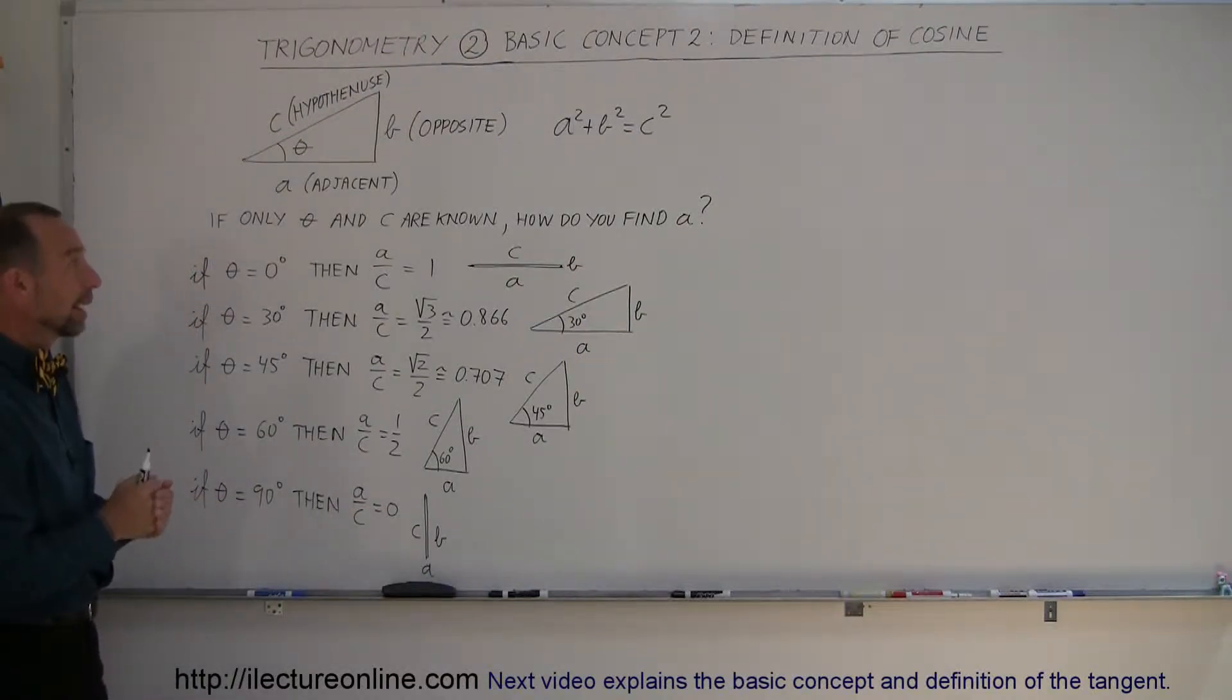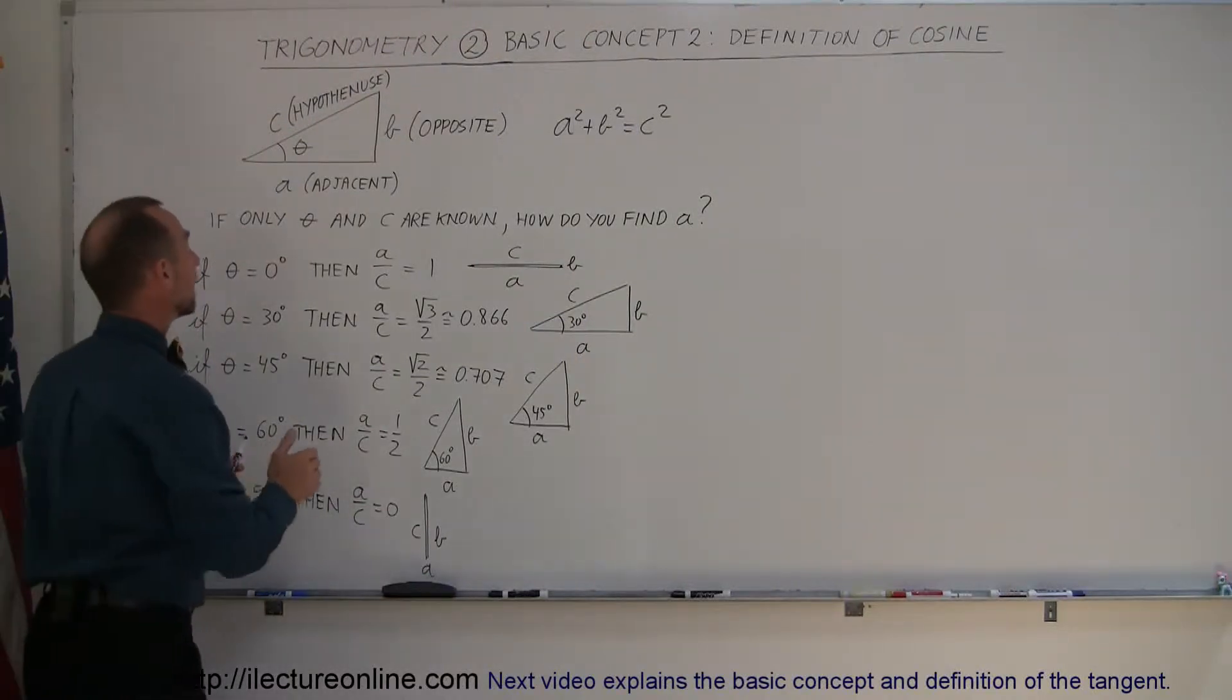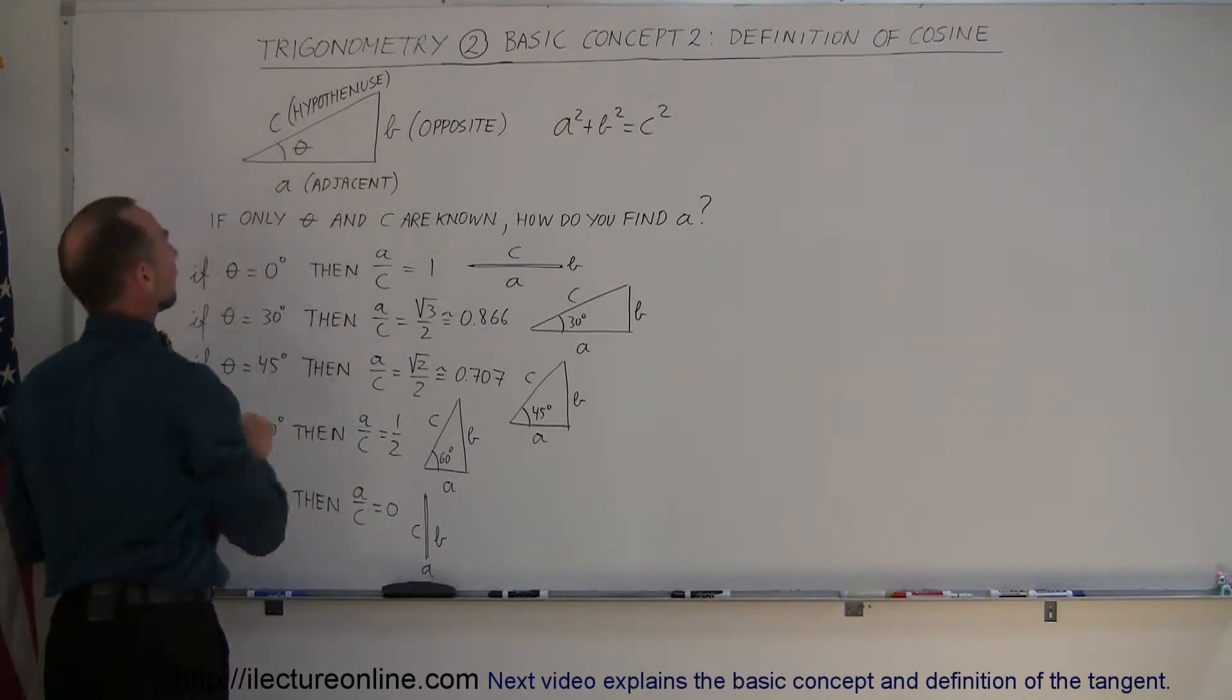Now we're going to look at the definition of the cosine. The definition of the cosine will relate the adjacent side to the hypotenuse.